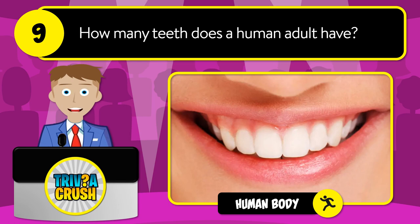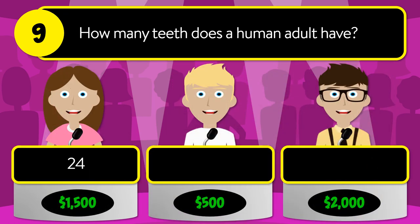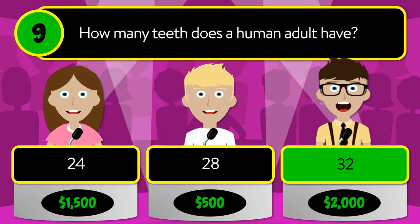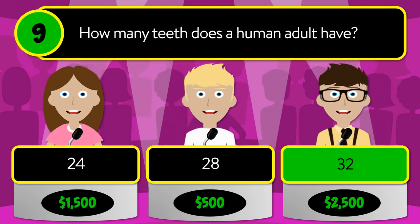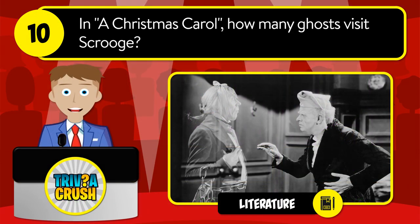Question number nine: how many teeth does a human adult have? Is it 24, 28, or 32? The correct answer is 32.